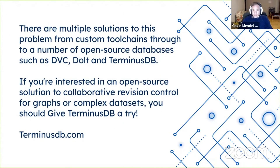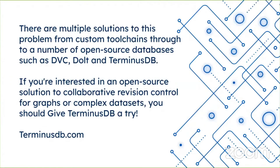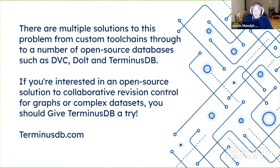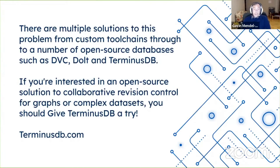There are multiple solutions to this problem. You can do it inside the database, with custom toolchains, or use CSVs and Git — which is an improvement for a lot of shops from what I've seen in practice. But there's also a new series of open source databases that have come out: DVC, Dolt, and TerminusDB, which all give you these sorts of revision control type collaborative aspects. If you're interested in an open source solution for collaborative revision control for graph databases or complex datasets, you should give TerminusDB a try, and also check out DVC and Dolt.